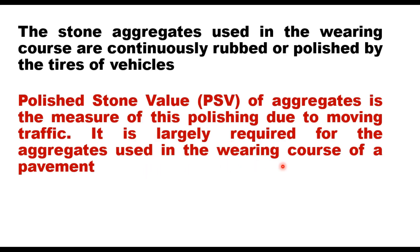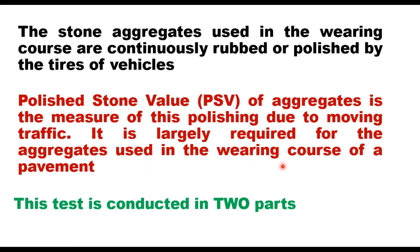This test is conducted in two parts. In the first part, the aggregates are subjected to an accelerated polishing action in a special machine. In the second part, the friction value of these polished aggregates is measured using a friction tester. This value is expressed as polished stone value, or simply PSV.